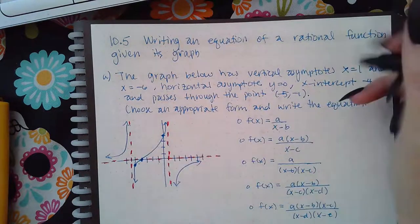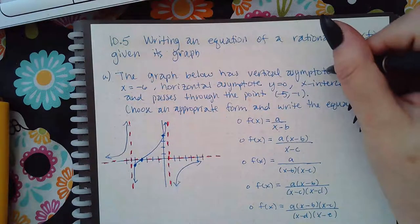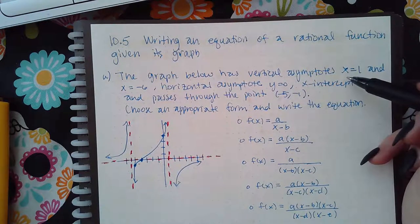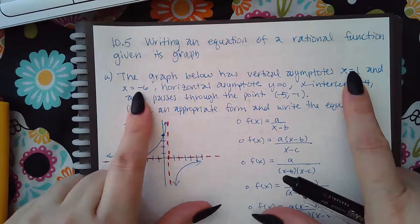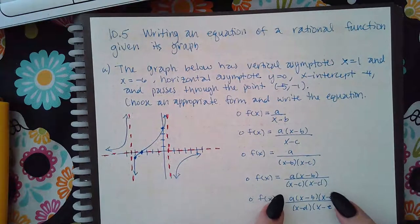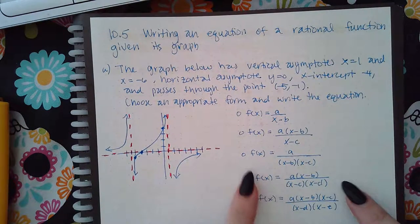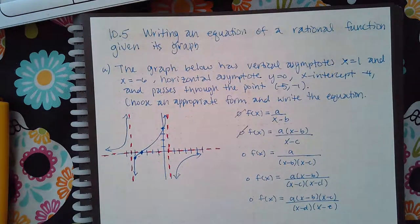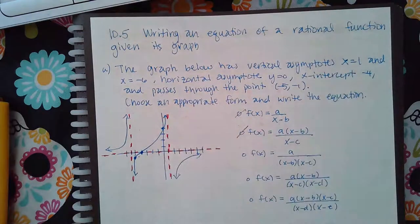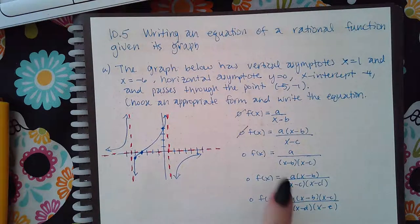Remember that your vertical asymptotes come from your denominator, so if you're given the vertical asymptotes you can determine your denominator. Since I have two vertical asymptotes, that means I need two factors in my denominator, which means certain forms cannot possibly work. Two vertical asymptotes means two factors in the denominator, so it's got to be one of the remaining forms.